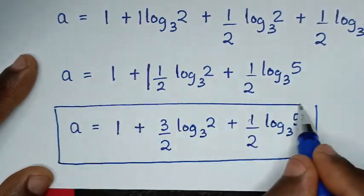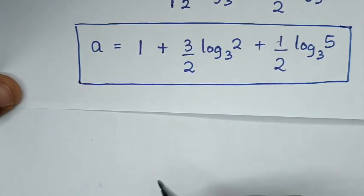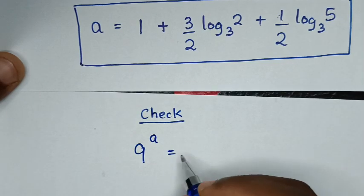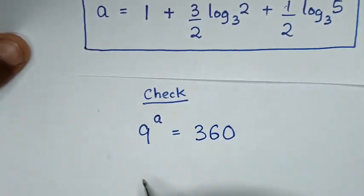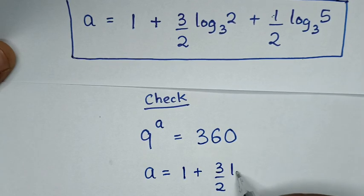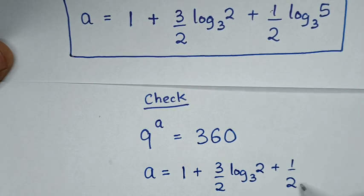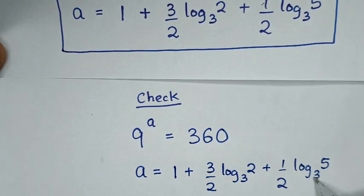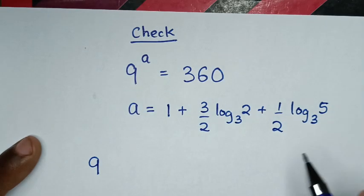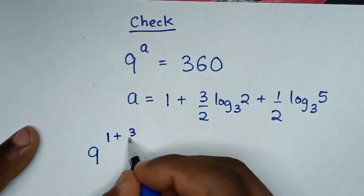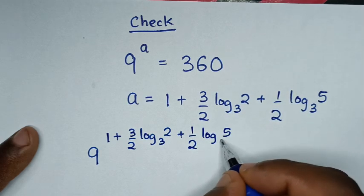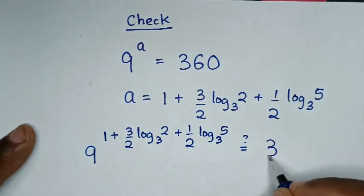Now let's check this answer if it is correct. From our problem which is 9 power of a is equal to 360, where a is equal to 1 plus 3 over 2 log of 2 base of 3 plus a half log of 5 base of 3. So we compute 9 to the power of 1 plus 3 over 2 log of 2 base of 3 plus a half log of 5 base of 3, and check if it equals 360.